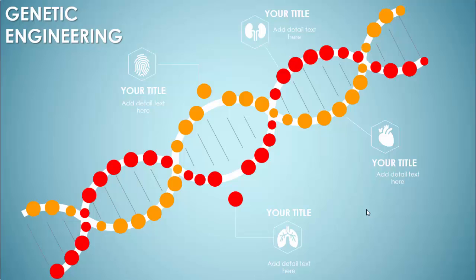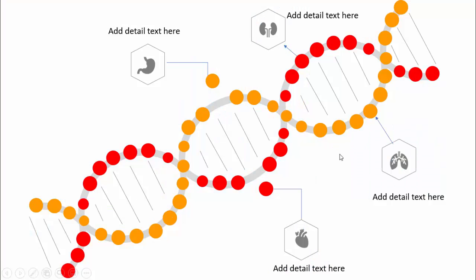Based on requests from subscribers, I've created this genetic engineering slide. You can see the DNA designed with a curved shape using an orange and red color combination. I've moved the two DNAs apart, added a title, icons like a fingerprint, and detail text. I also created one more slide with a white background, so depending on your requirement you can select either slide. Let's see how to do this in PowerPoint.